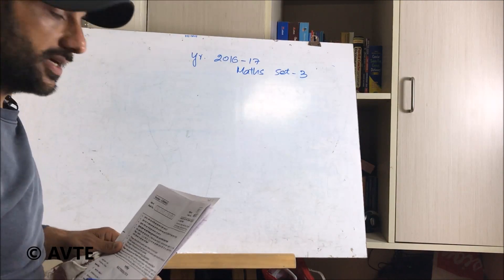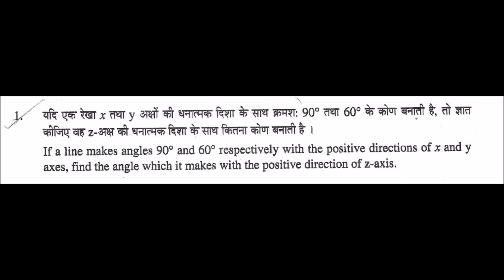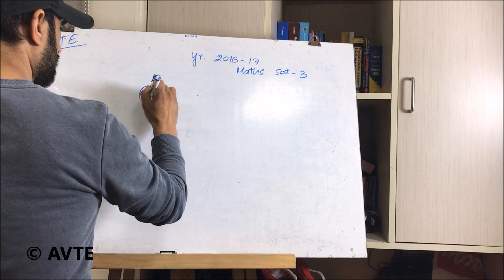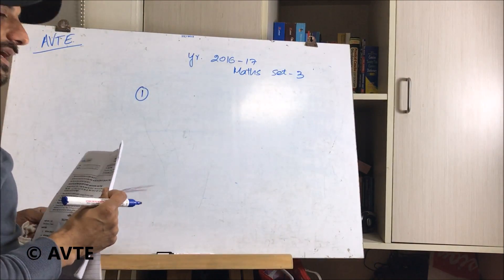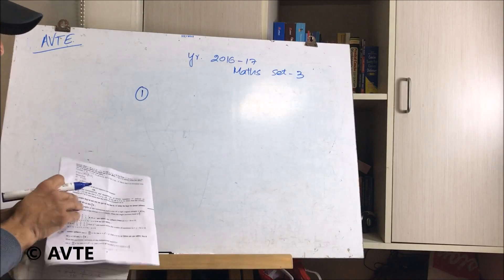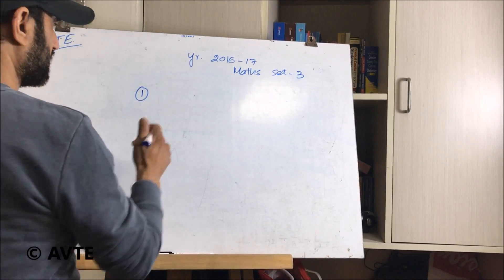This is the solution of section A, the first question. They are saying that the line is making 90 degrees and 60 degrees respectively with the positive direction of the x-axis and y-axis.